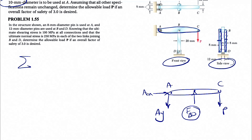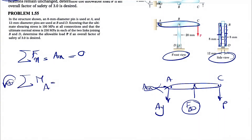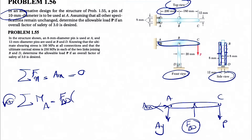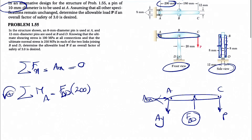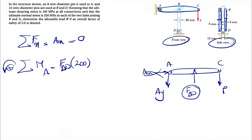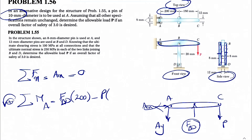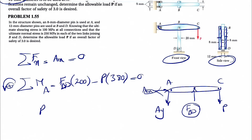Moving on with the equilibrium equations: summing all forces in X, we only have AX in the X direction, which means AX is zero. Taking moments about point A, counterclockwise positive, we get FBD times 200 minus P times the total length of member ABC, which is 200 plus 180 equals 380, set equal to zero. So P equals (200/380) times FBD.